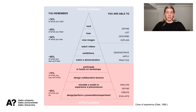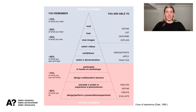The top part in blue shows what is passive learning and how you remember different actions — for example, you remember about 20 percent of what you hear, but about 50 percent of what you hear and see at the same time. The lower part shows possibilities in active learning, like creating and giving a presentation.